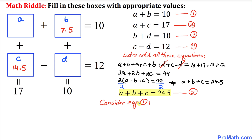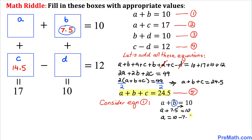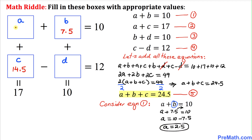Now consider equation 1: A plus B equals 10. We just found B equals 7.5, so replacing B gives A plus 7.5 equals 10. Moving 7.5 to the right-hand side: A equals 10 minus 7.5, so A equals 2.5.